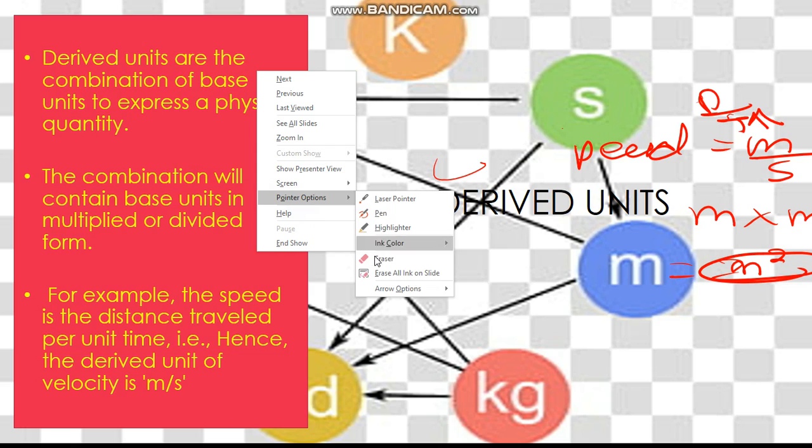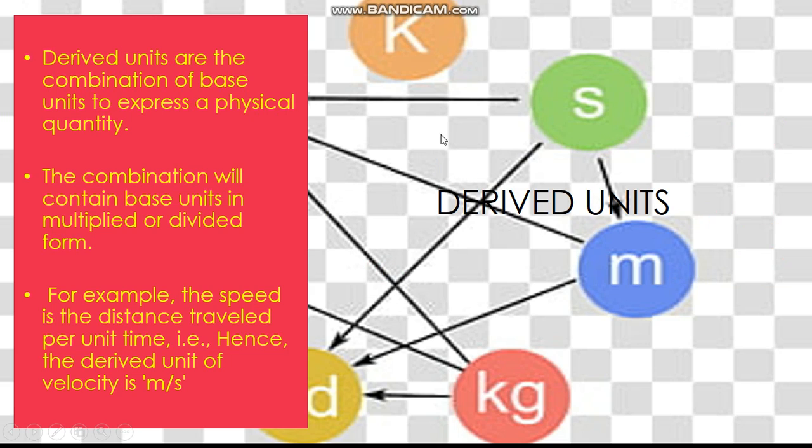These formulas used to measure or make a derived unit are known as combinations which will contain these base units in multiplied or divided form. For example, the speed, velocity, etc.